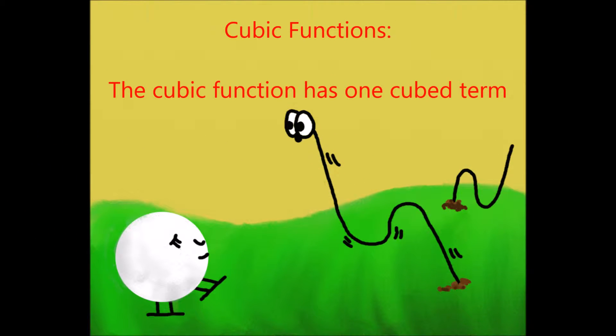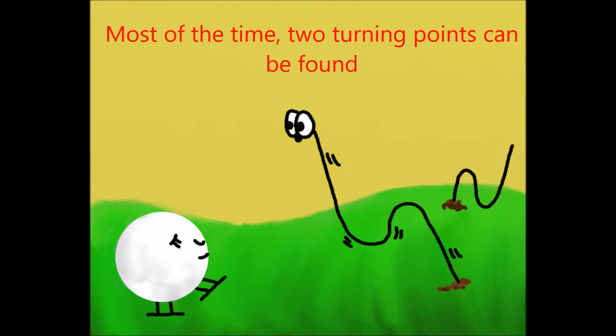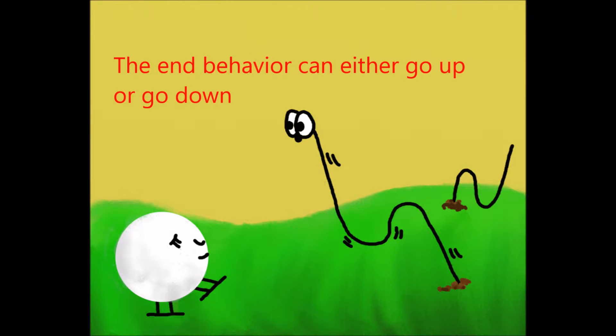The cubic function has one cubed term. When you graph the cubic function, it kind of looks like a worm. Most of the time, two turning points can be found. The end behavior can either go up or go down.